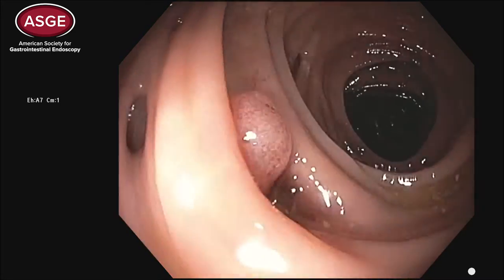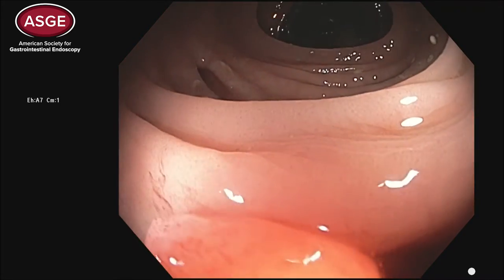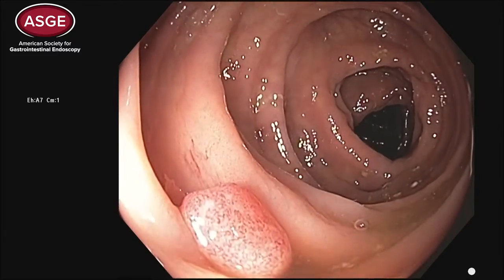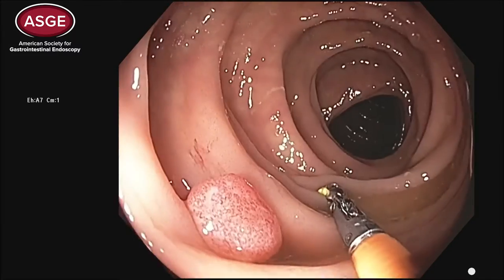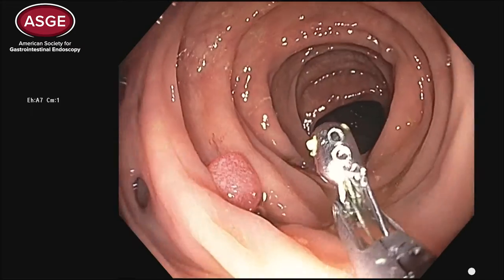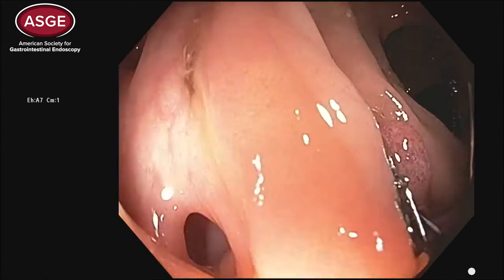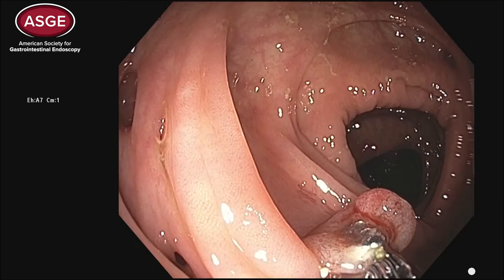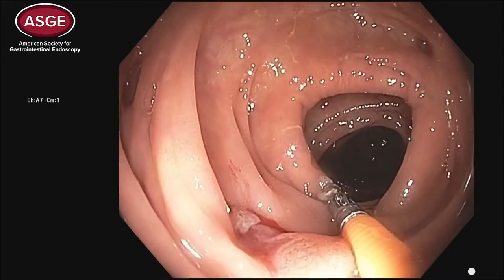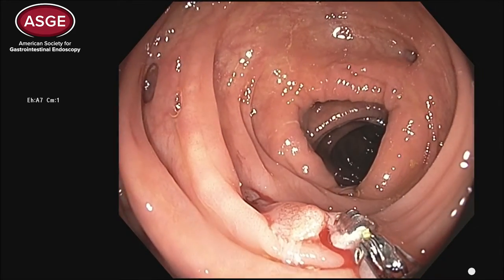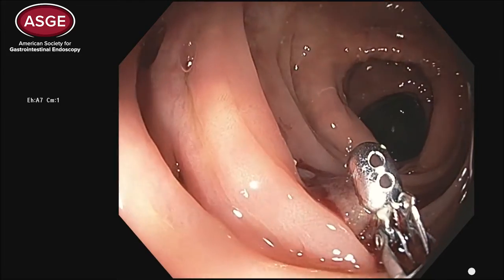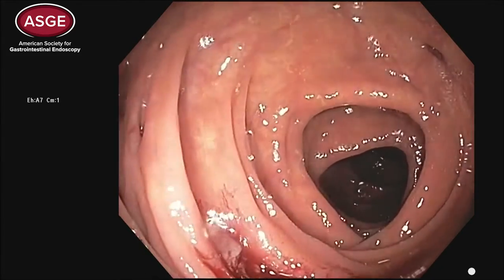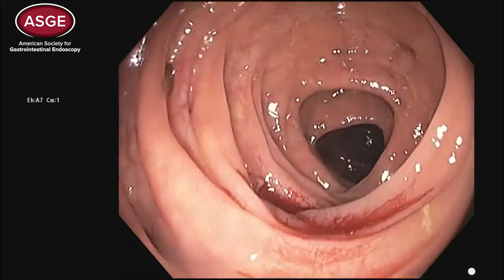These are typically small lesions located right in the diverticulum. Most of them are in the sigmoid, and only occasionally do you see them over a centimeter in size — usually fairly smooth. The clues are the absence of any discernible pit pattern on the surface, and they often appear ulcerated or have some patchy exudate on the surface, sometimes with an irregular vascular pattern.